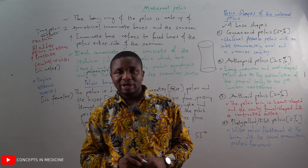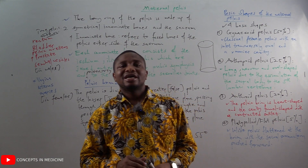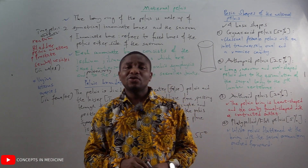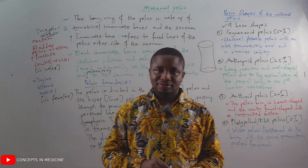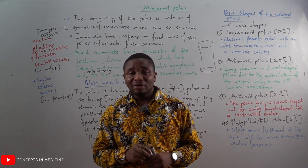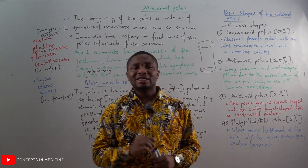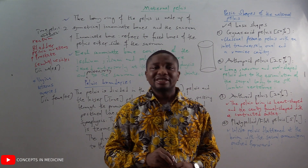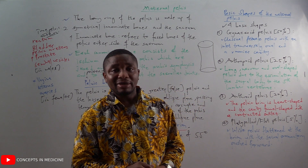The gynecoid pelvis is the classical female pelvis with an inlet that is transversely oval and a roomy pelvic cavity. The gynecoid pelvis is found in about 50 percent of the female population, making it the most common pelvic shape.